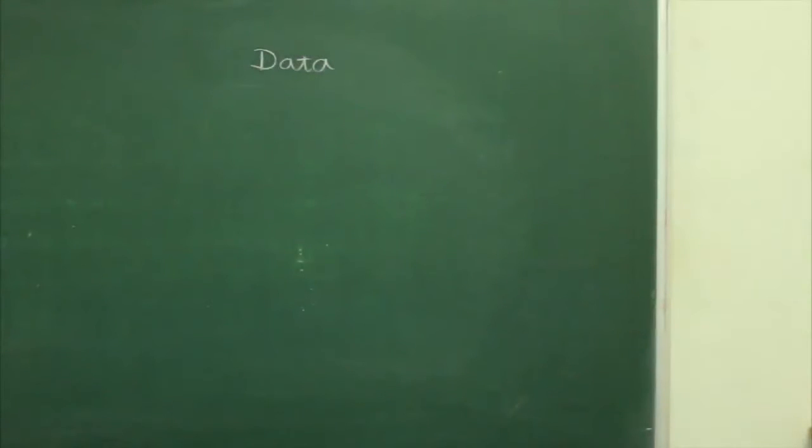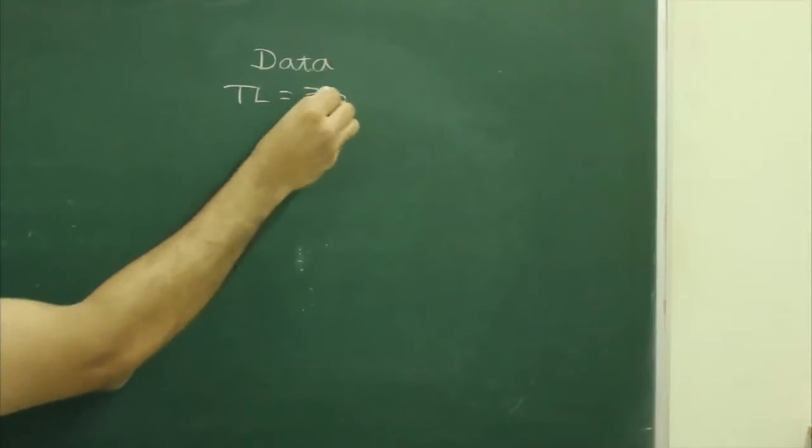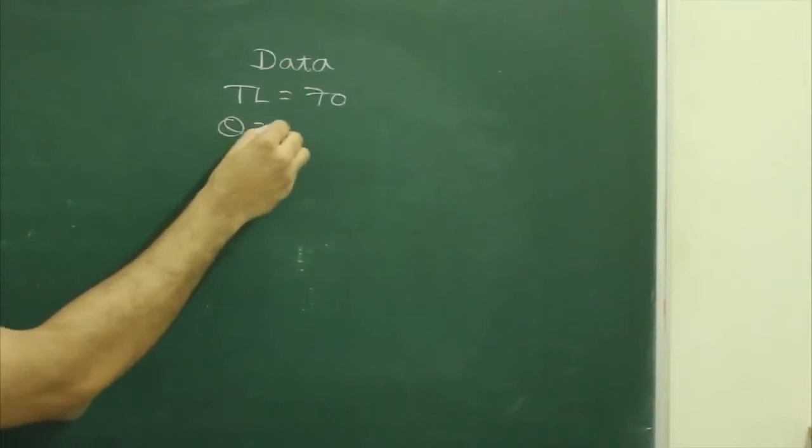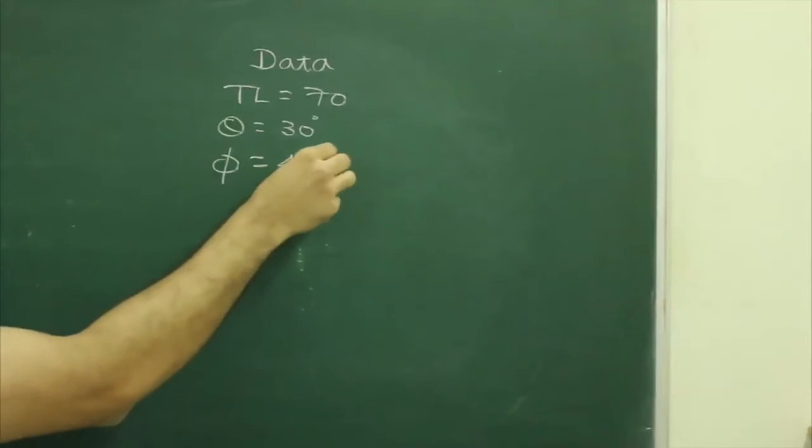First we will write the given data: true length 70, theta 30 degrees, phi 45 degrees.